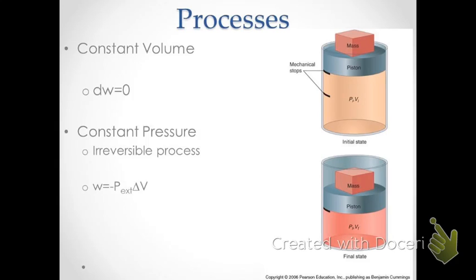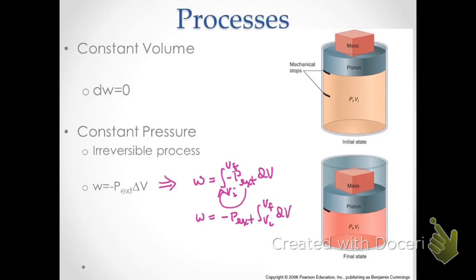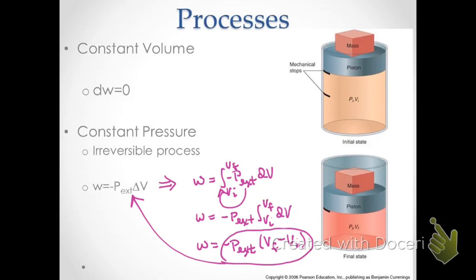To calculate the work for this irreversible constant pressure process, we go to the expression: work equals the integral of negative P times dV. Because the pressure is constant, we move it outside the integral, giving us work equals negative P_external times delta V. It really just becomes a plug-and-chug calculation.